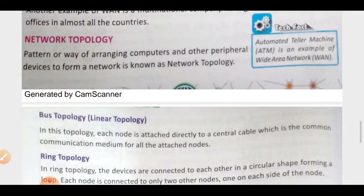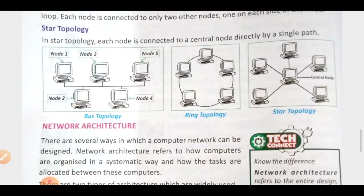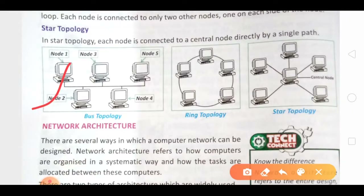The next topic is network topology. Topology is simply how we are connecting or organizing computers with each other, and in which way or sequence we are transferring data from one computer to another. All these topics come under network topology. The first topology is bus topology. In a bus topology, there is a common wire. As you can see in the figure, all computers are connected to this common wire. This type of topology is called bus topology.